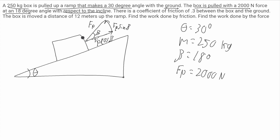Now I'll finish drawing the free-body diagram. This box has gravity pointing straight down. I'll split gravity into its components: a y-component and an x-component. This angle will be theta, the same as the ramp angle. So the y-component is mg cosine of theta, and the x-component is mg sine of theta.